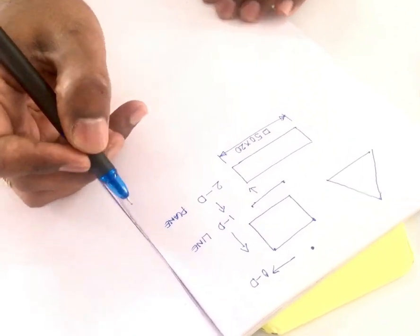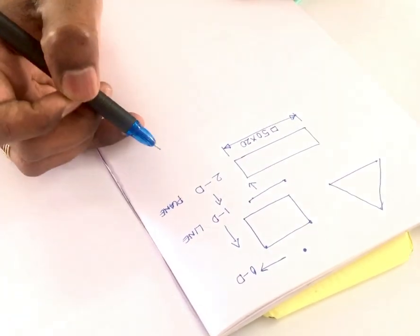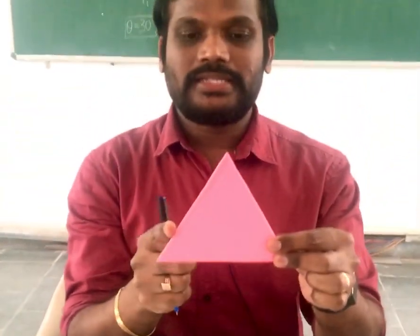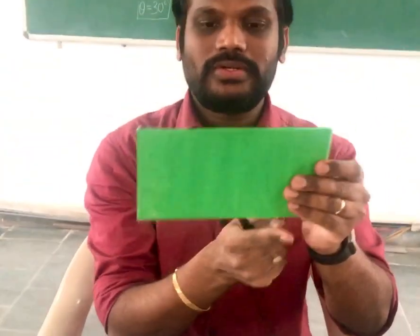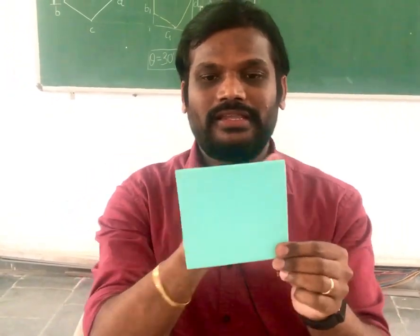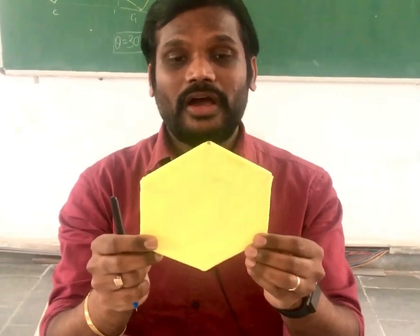This is the progression in engineering graphics from 0D to 1D to 2D. A plane is nothing but a collection of lines, and we have different types of planes. If it has three sides, it is a triangle. If it has four sides with two same parallel sides, it is a rectangle. When all sides are equal, it is a square. If it has five sides or five edges, it is a pentagon. A regular polygon with six sides is a hexagon. How to draw a pentagon, hexagon, and division of a circle were also uploaded in my channel.